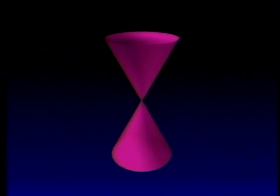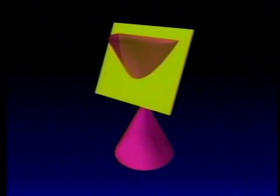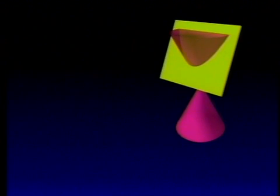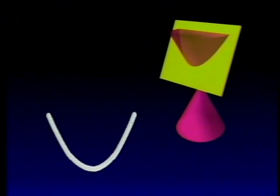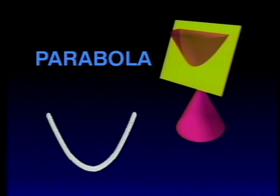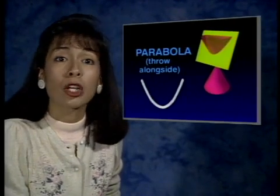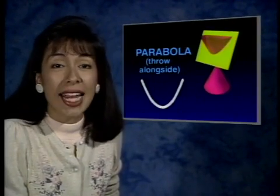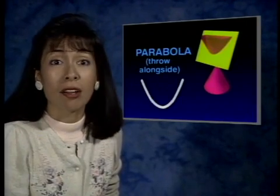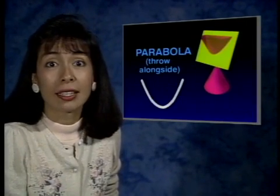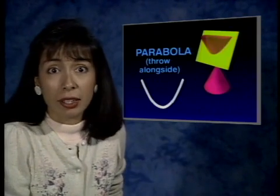Then suppose we angle the plane even more so that it is parallel to the line that generated the cone. The path of that cut would be a parabola. This word comes from a Greek word meaning 'to throw alongside,' probably used because it is the same type of path an object thrown upward would take as it rises and falls symmetrically alongside a vertical line. Parabolic curves are used extensively for reflectors in electronics, in telescopic mirrors, and in bridge building.